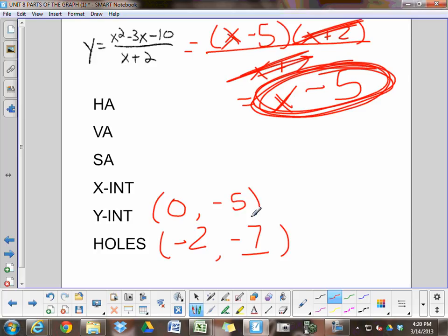One little thing to think about there is if there was a hole at 0 and your y-intercept was at 0 comma something, there wouldn't be a y-intercept. If you ever have a point that's also where a hole is, then you're not going to have a point actually there.